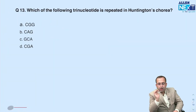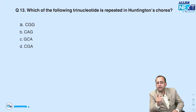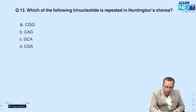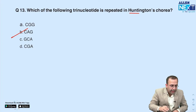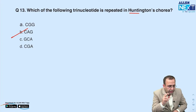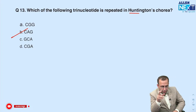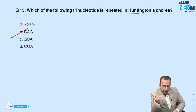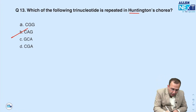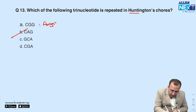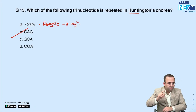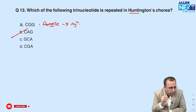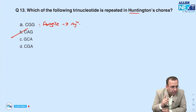Trinucleotide repeat in Huntington's disease: hunter keeps the animal in a cage — CAG, CAG, CAG. Huntington's is CAG. Versus Fragile X syndrome which is CGG. Remember the distinction.